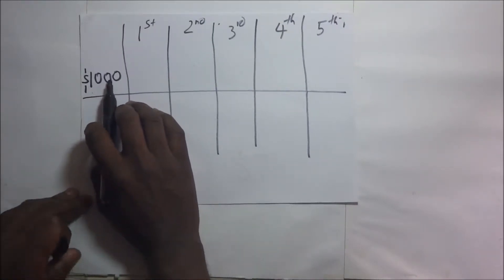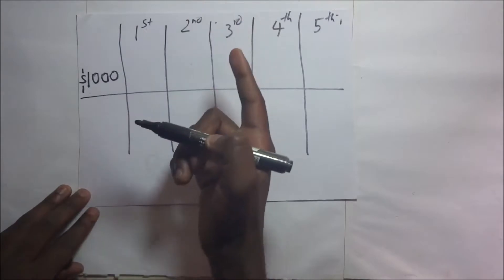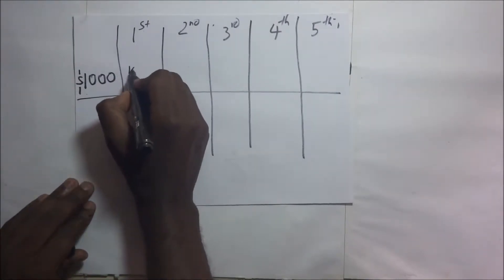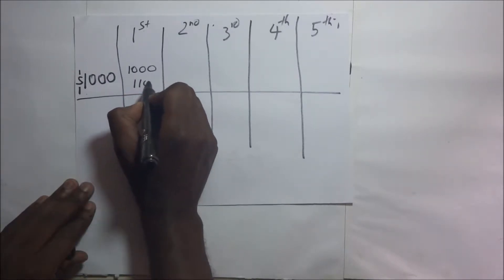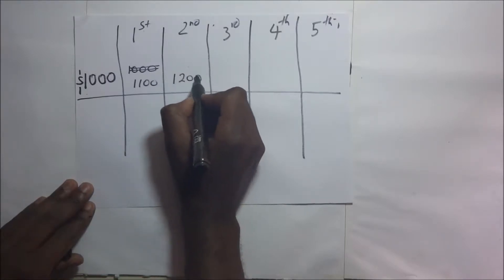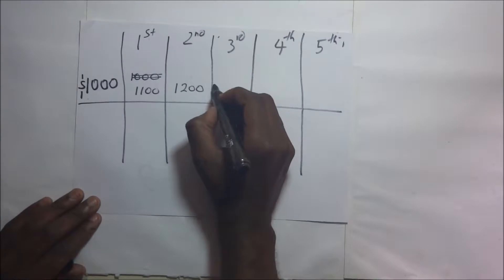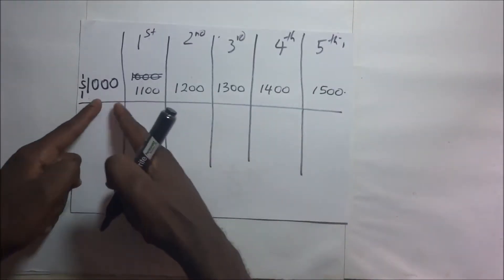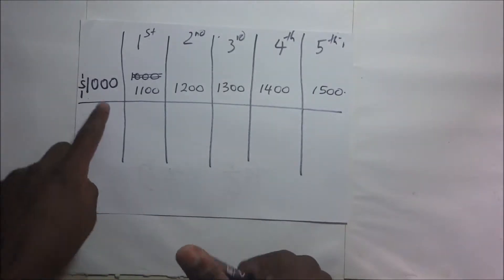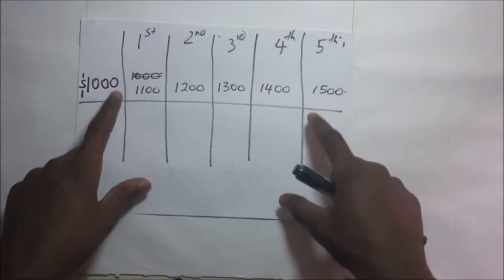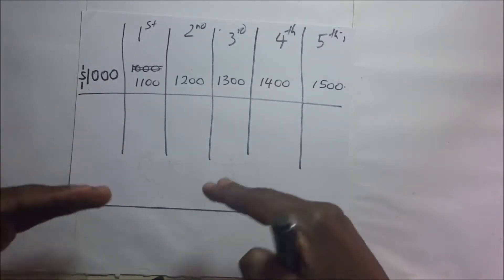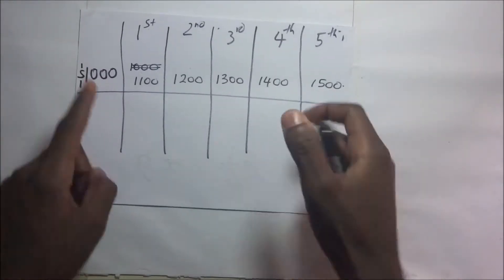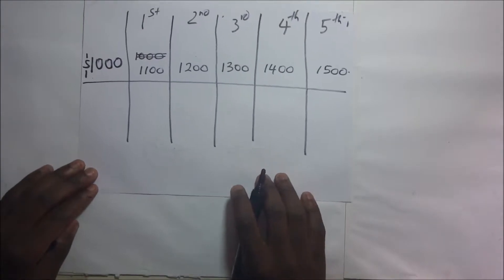My salary has been a thousand dollars, but beginning at the end of this first month they are going to increase it by a hundred dollars. So after the first month my new salary becomes $1,100, then in the second month $1,200, third month $1,300, then $1,400, and $1,500 in the fifth month. So at the end of these five months my salary will have increased from $1,000 to $1,500. The change in salary is simply the final figure minus the initial figure: $1,500 minus $1,000 equals $500.